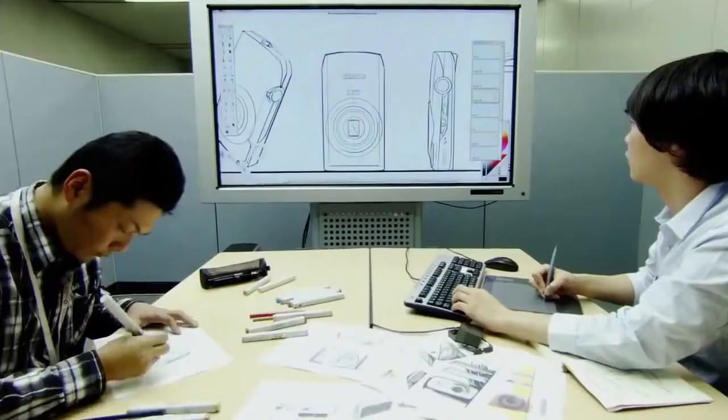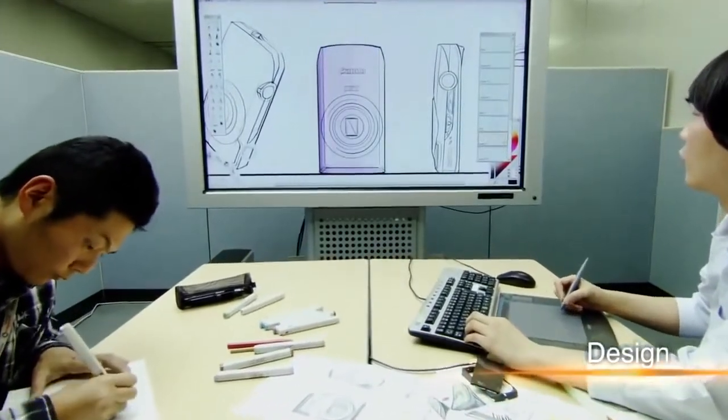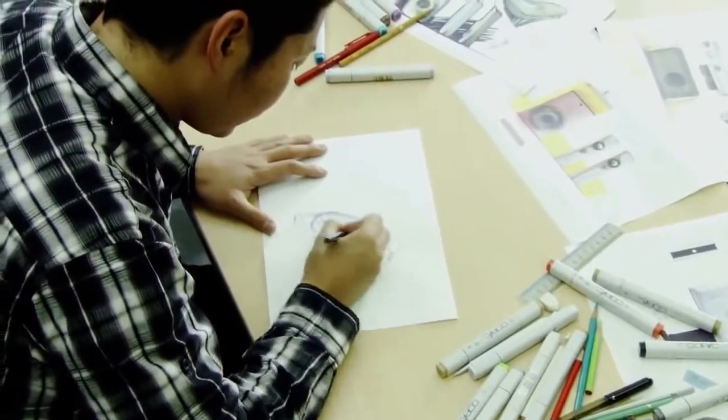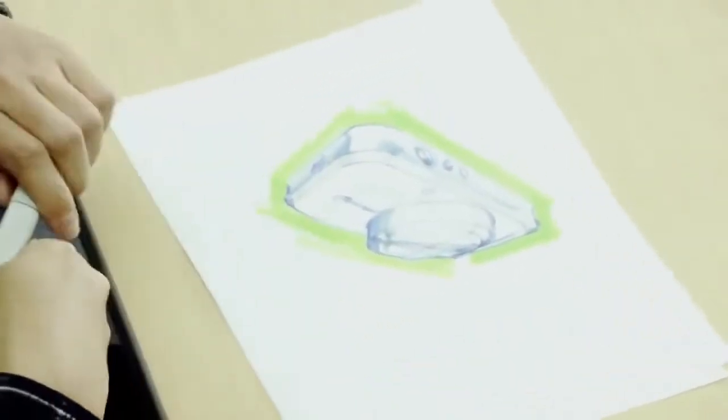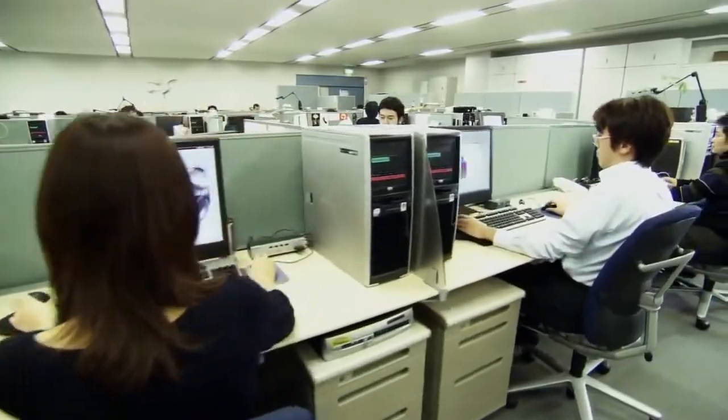How are digital cameras designed and developed? First, a designer sketches the body of the camera. A 3D model is then created on a computer, and the details are worked out.